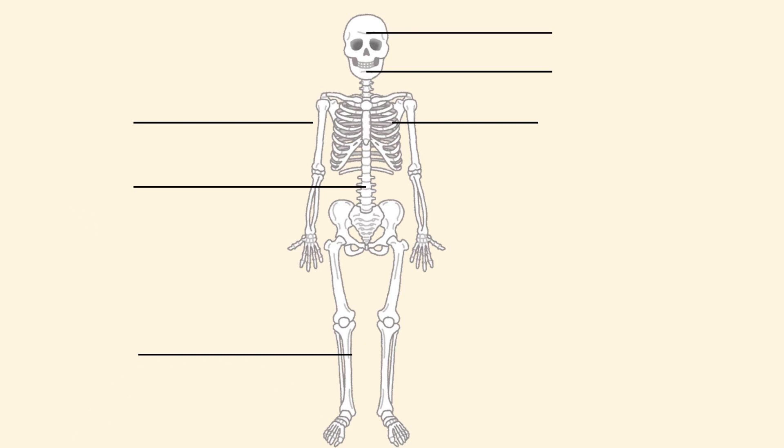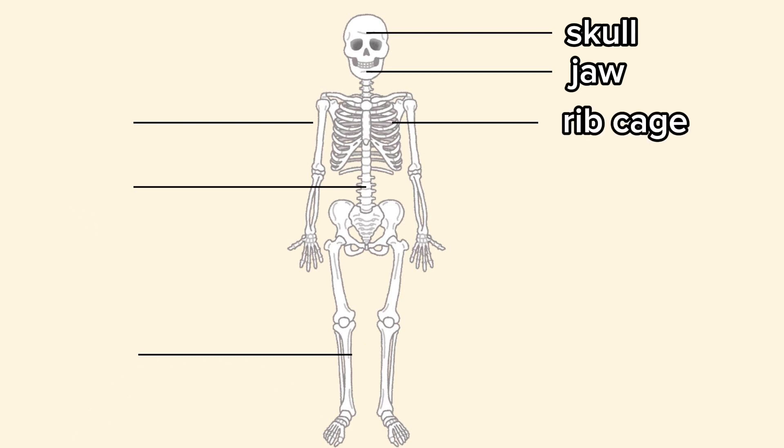The first line is pointing to the skull. The second line is pointing to the jaw, J-A-W, jaw. The third line is pointing to the rib cage, rib cage.